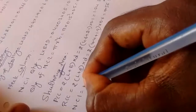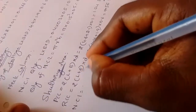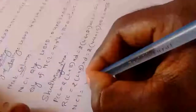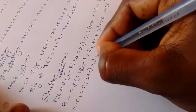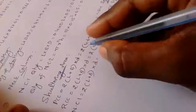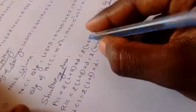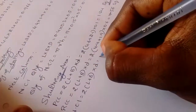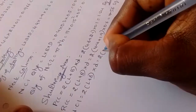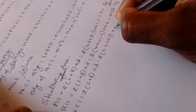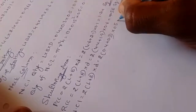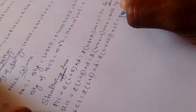Shuttering area of neck column 1 uses the same formula — 2 into L plus B into D, since it is also rectangular. Substituting: 2 into (0.4 plus 0.3), depth of neck column is 0.5 meters. Total is 0.7 square meters.